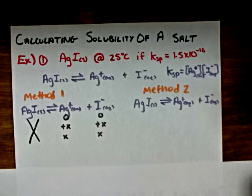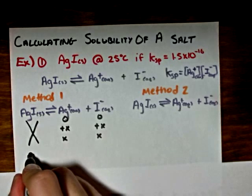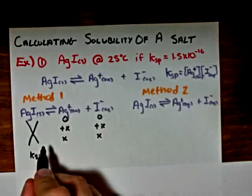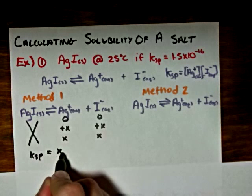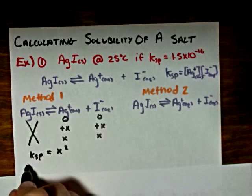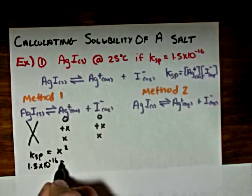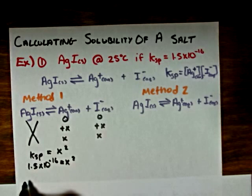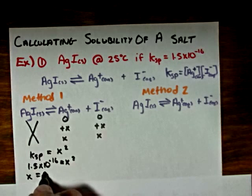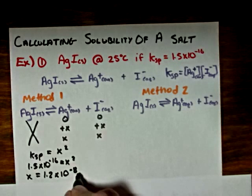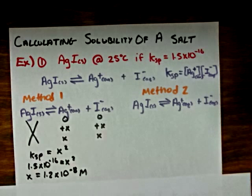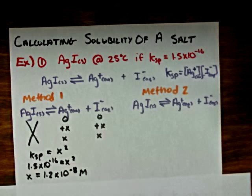From our equilibrium expression, we can substitute these values of X in for each of the ions. What we'll get is Ksp will be equal to X squared, or 1.5 times 10 to the negative 16 is equal to X squared. We solve that and get that X is equal to 1.2 times 10 to the negative 8 moles per liter. So at equilibrium, the concentration of the silver ion and iodide ion will each be equal to 1.2 times 10 to the negative 8 moles per liter.